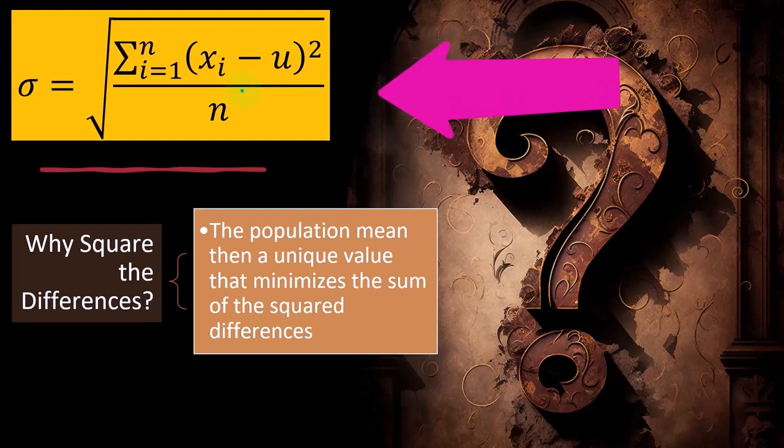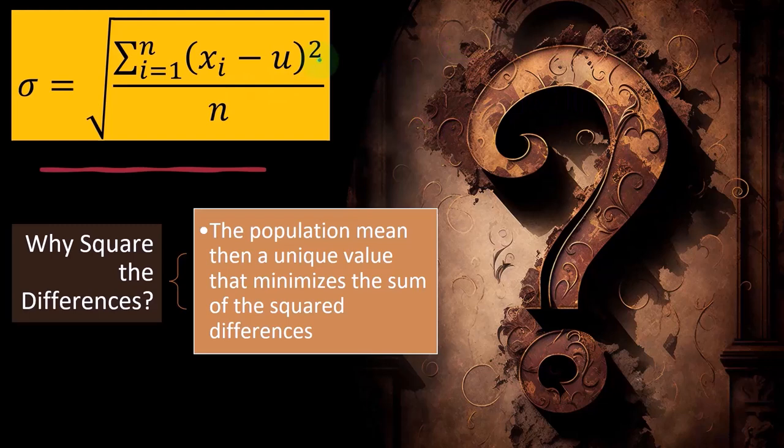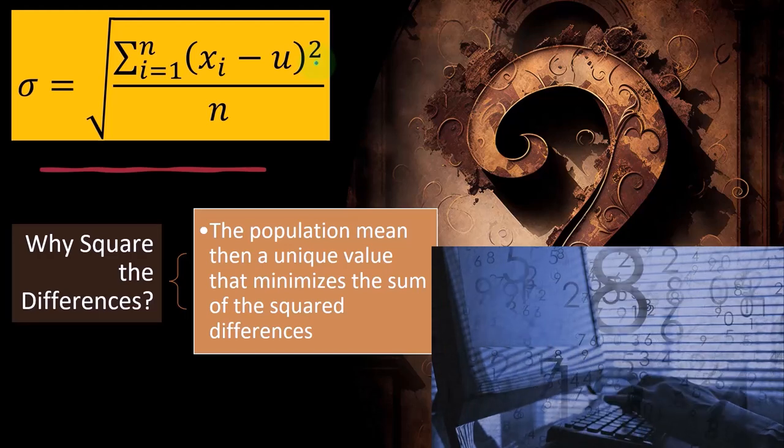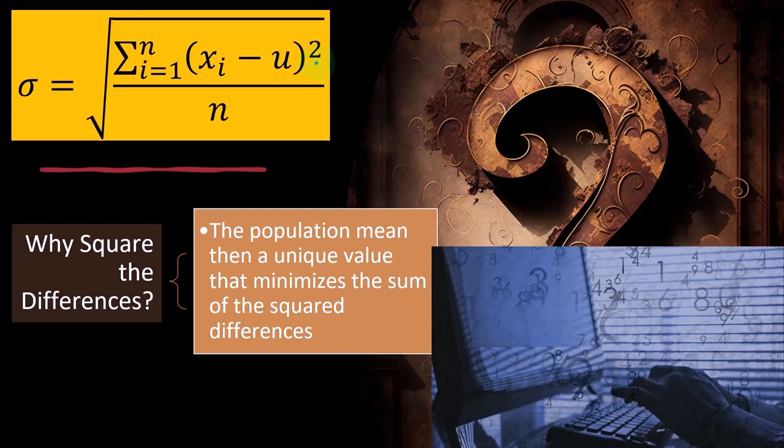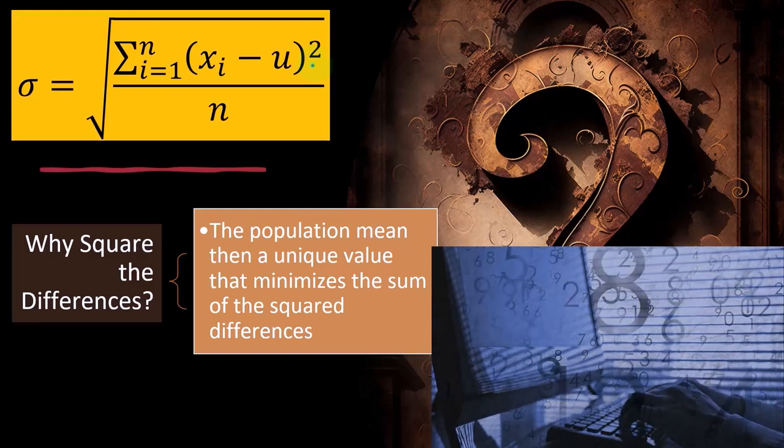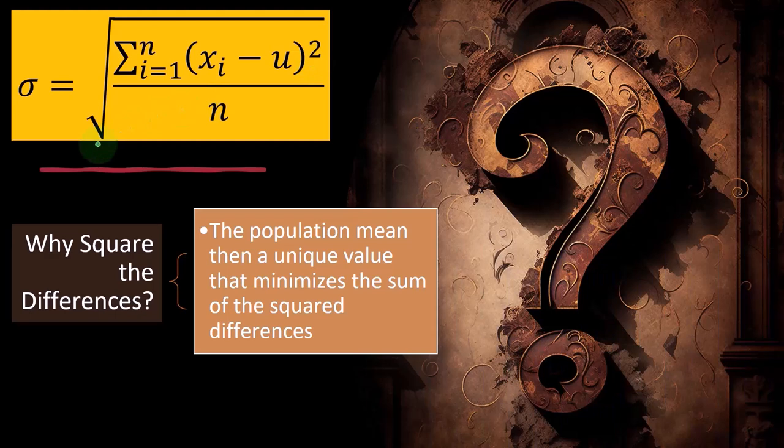But when asked why we square the data, most people will tell you that you do that because that gets rid of the negative numbers, and you need to get rid of the negative numbers. But then the question, of course, is, well, why don't you just take the absolute value? Because that also gets rid of the negative numbers and is easier because you don't have to square it and then take the square root.